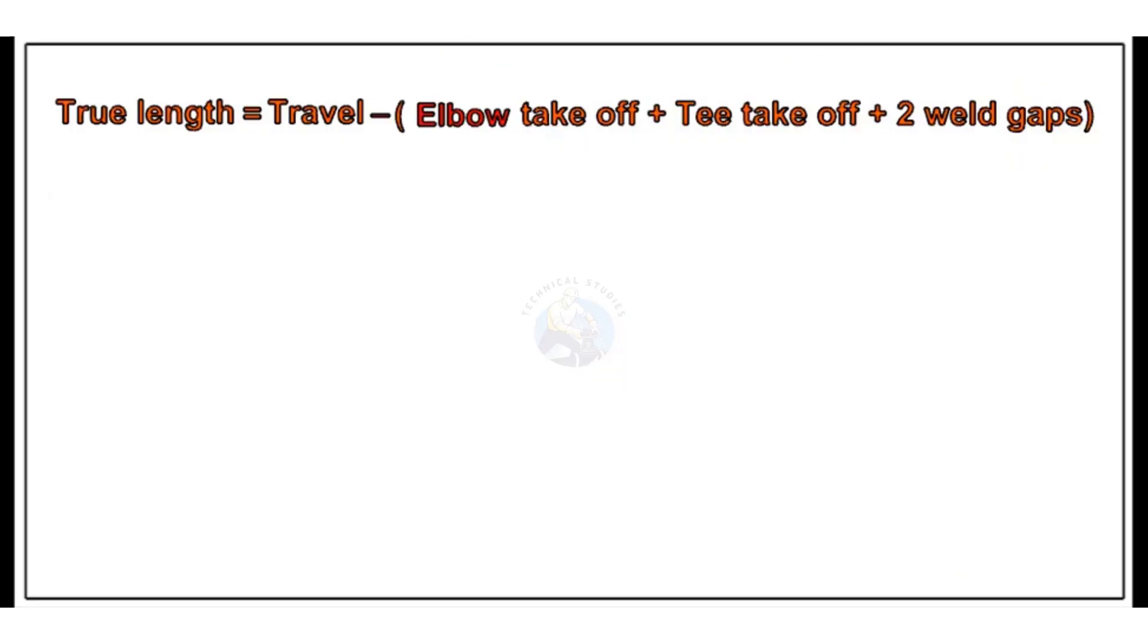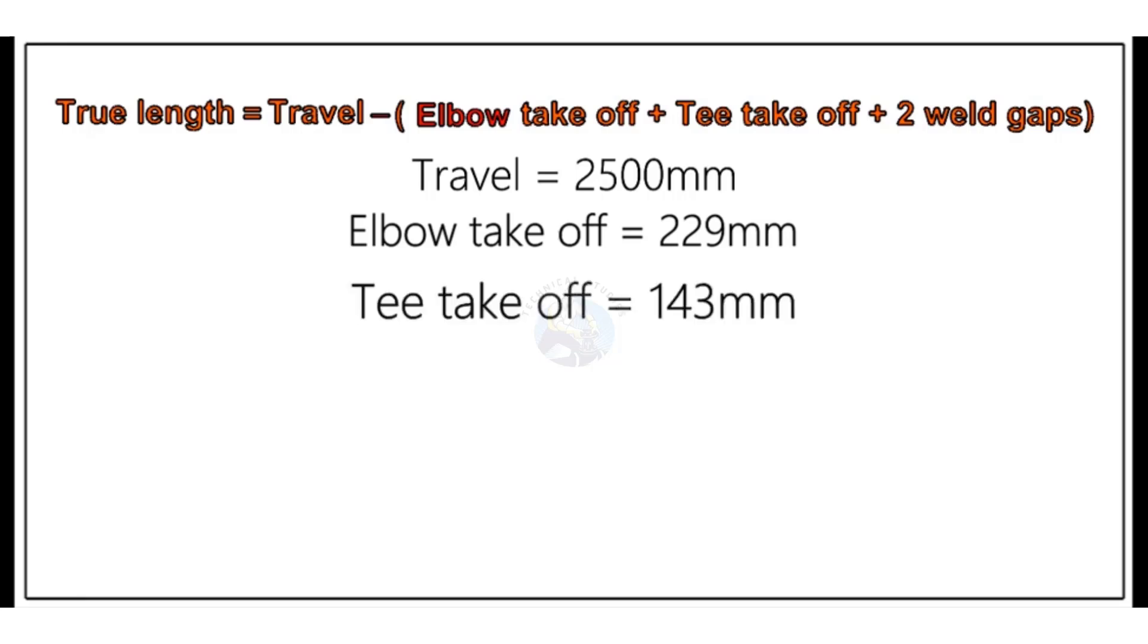We have all the required dimensions now. Deduct the takeoff of the tee and the elbow and two weld gaps from the travel length. The travel length is 2500 millimeters. Elbow takeoff equals 229 millimeters. Tee takeoff equals 143 millimeters. Two weld gaps equals 6 millimeters.